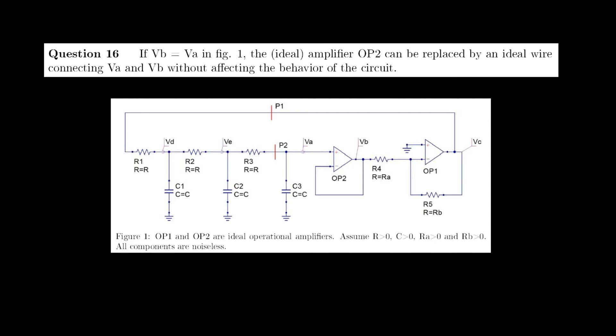This video will discuss the solution to question 16, which is a true-false statement that goes as follows: If VB equals VA in figure 1, the ideal amplifier OP2 can be replaced by an ideal wire connecting VA and VB without affecting the behavior of the circuit.